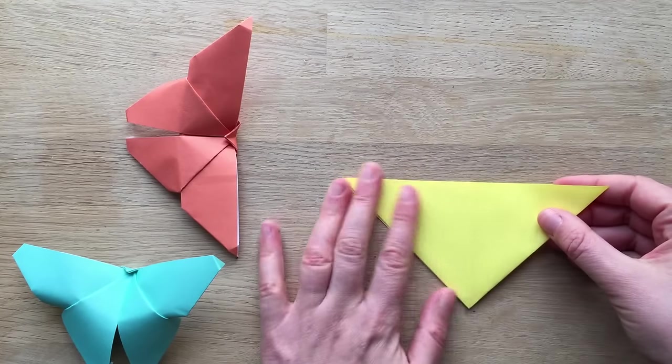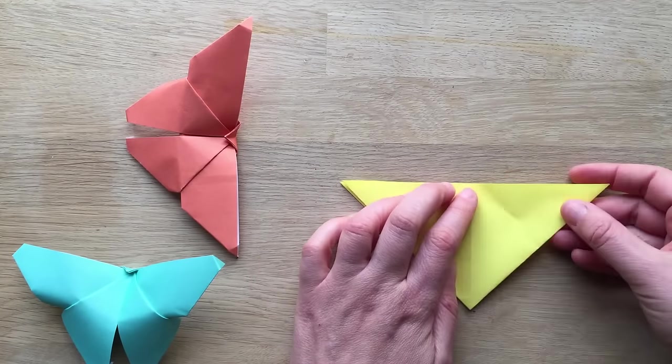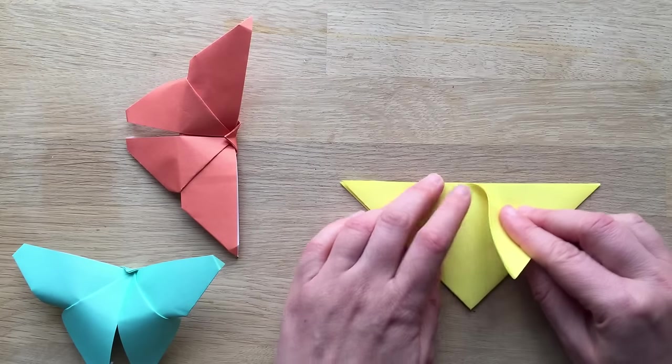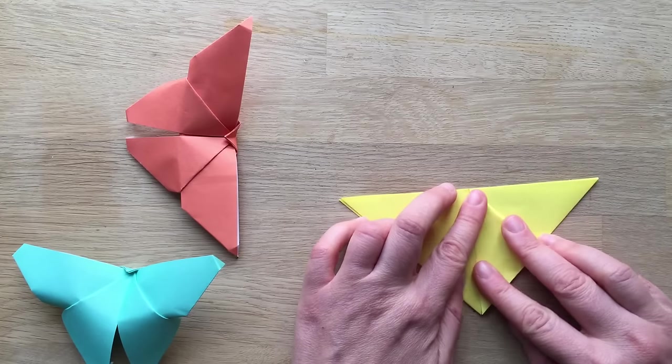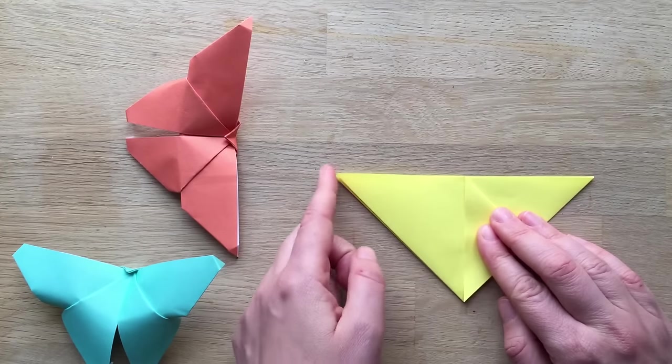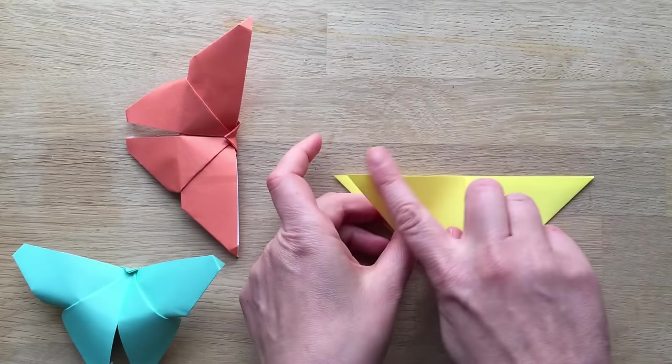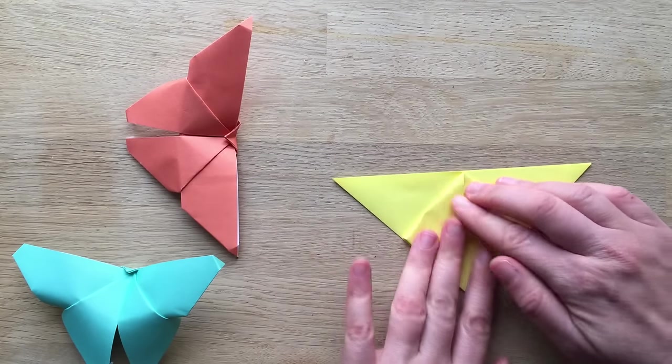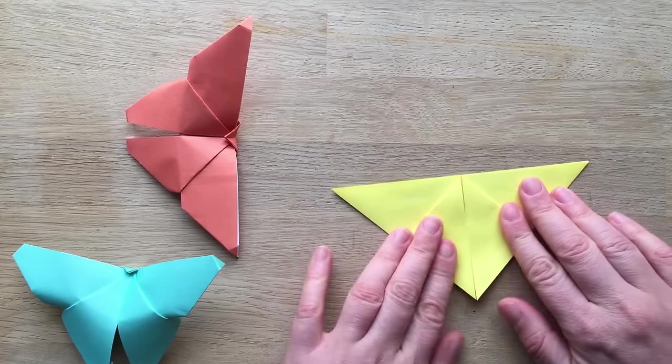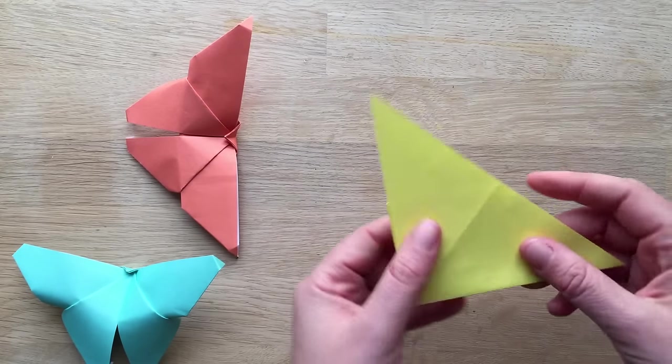So now I'm going to fold down the top one, this straight edge along this straight edge so the points meet at the end, and then I'm going to take this straight edge to meet this straight edge, here we go. Then I turn it around.